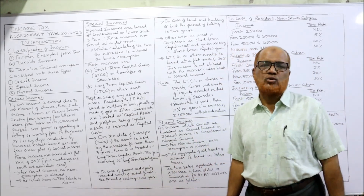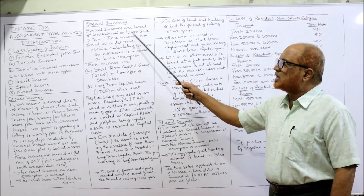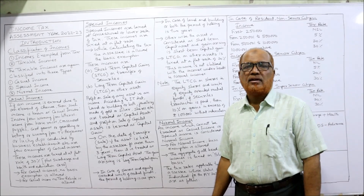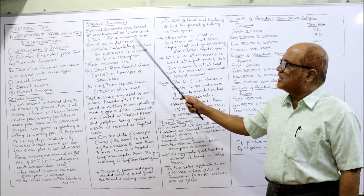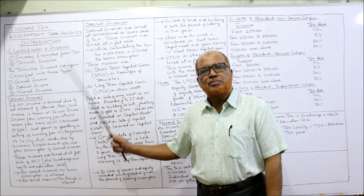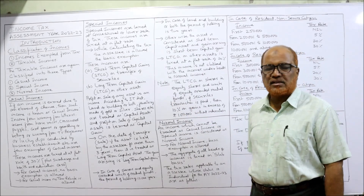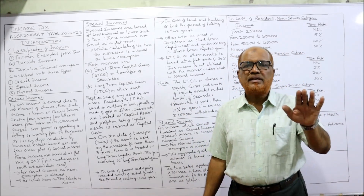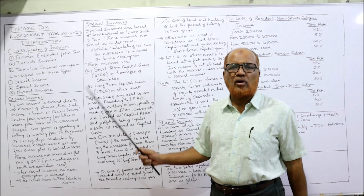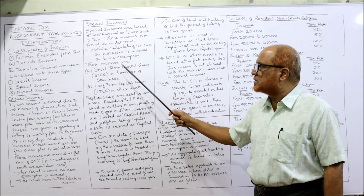Now the second category: special incomes. Special incomes are taxed at a concessional or lower flat rate of tax. Unlike casual income, the basic exemption limit is allowed for special incomes. Examples of special incomes include short-term capital gain (STCG) on transfer of securities such as shares and bonds, and long-term capital gain (LTCG) on transfer of other assets.